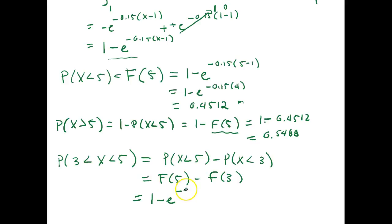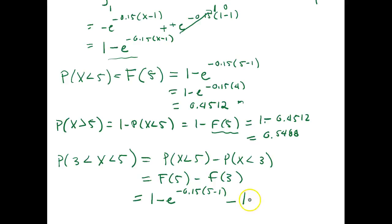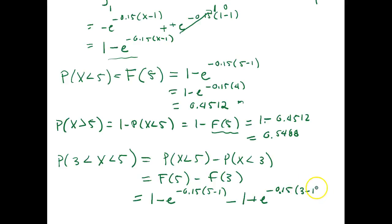This expands to: [1 minus e to the negative 0.15(5 minus 1)] minus [1 minus e to the negative 0.15(3 minus 1)], substituting our values into the CDF expression.